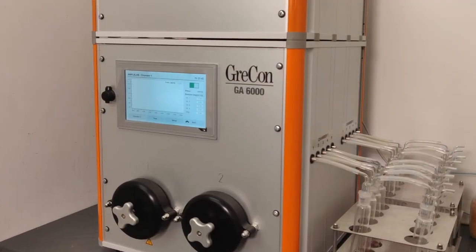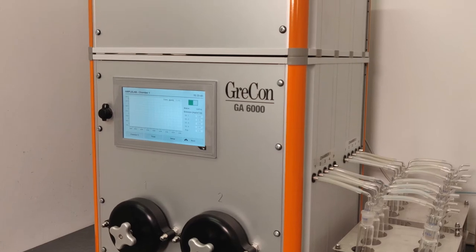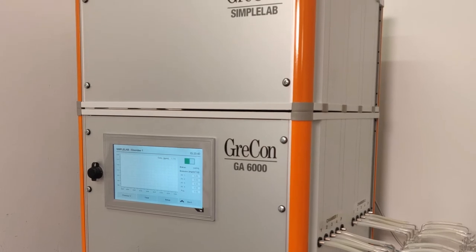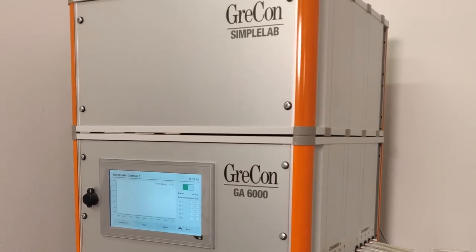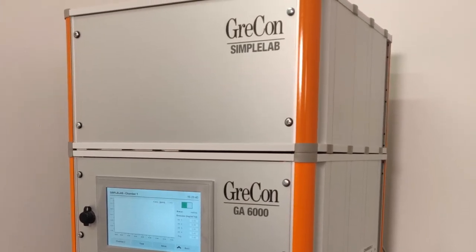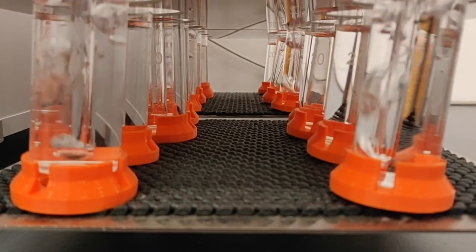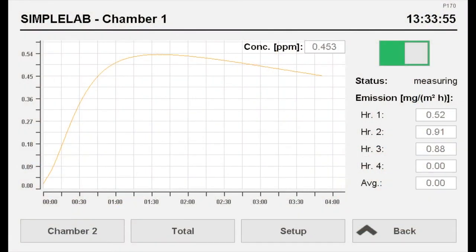Emission measurement becomes even easier when the GA-6000 is combined with SimpleLab. What is SimpleLab? SimpleLab is a state-of-the-art gas analyzer that measures continuously the formaldehyde concentration in the GA-6000 sample gas stream and directly calculates the gas emission values.